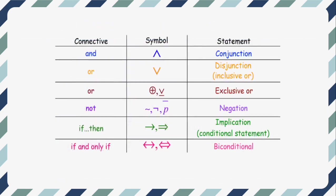The connectives are: and, or, not, if-then, and if and only if. These are the symbols that we use in symbolic form, and these are the types of statements they are called: and is a conjunction, or is a disjunction, not is a negation, if-then is an implication, and if and only if is biconditional.